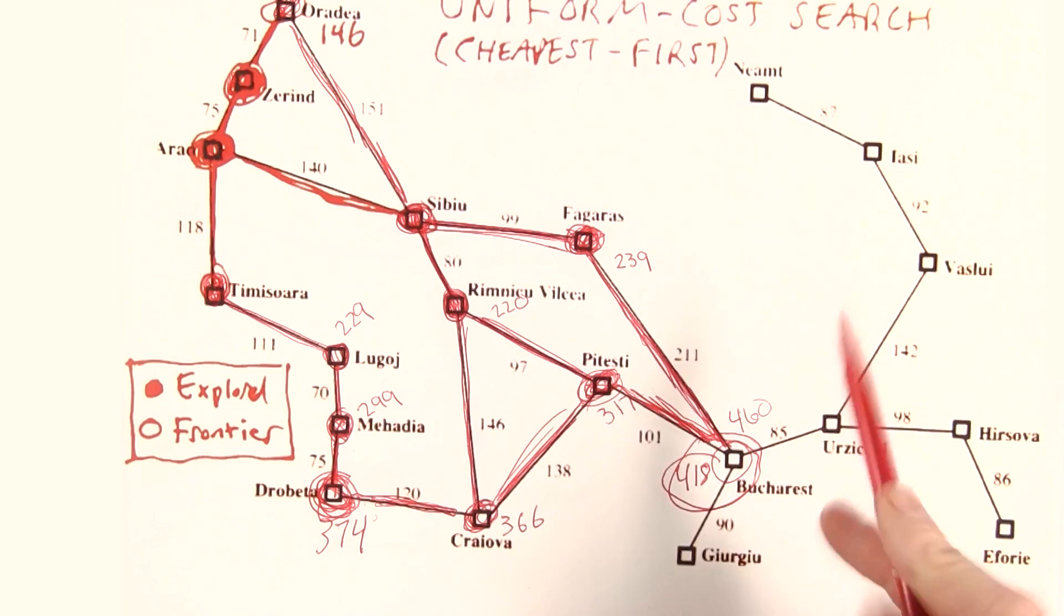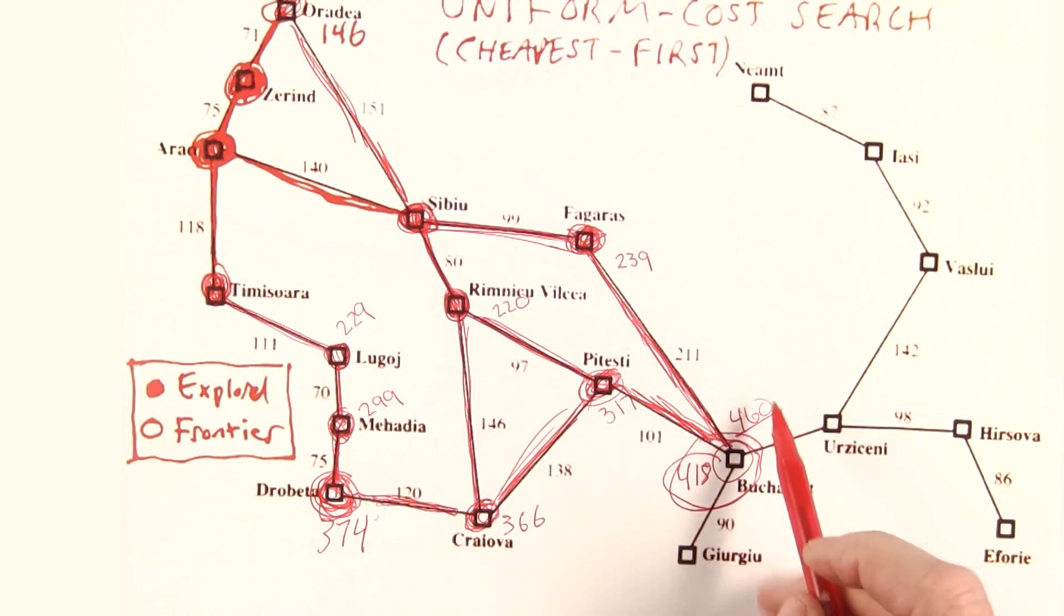So even though we found the 460 path first, we don't stop there because there might be another path that also reaches the goal that's cheaper. We keep on going until we pop a path off of the frontier that reaches the goal, and that's why Uniform Cost Search is guaranteed to find the cheapest path to the goal.